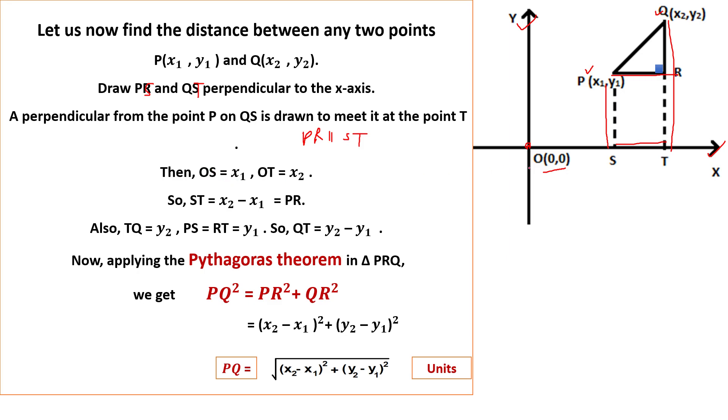So then find out the points: OS is your x1 and SP is your y1. Second, OT is your distance x2 and QT, your distance is y2.